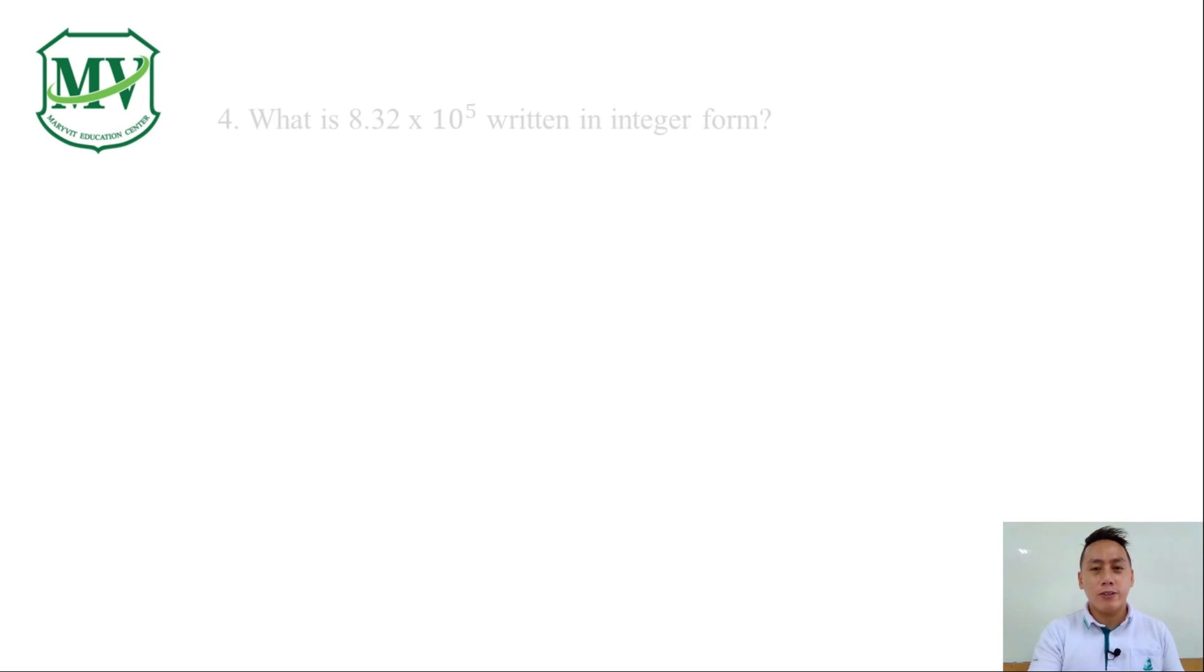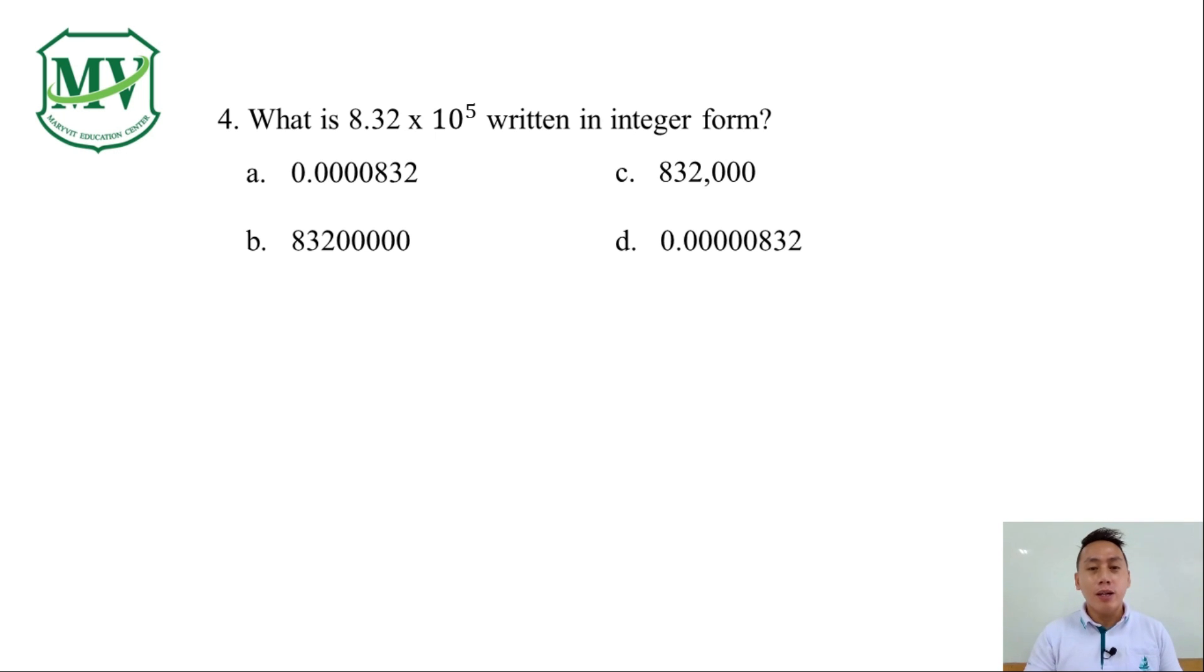Number 4. What is 8.32 x 10 raised to the power of 5 written in integer form? A. 0.00000832. B. 83,200,000. C. 832,000. Or D. 0.00000832.